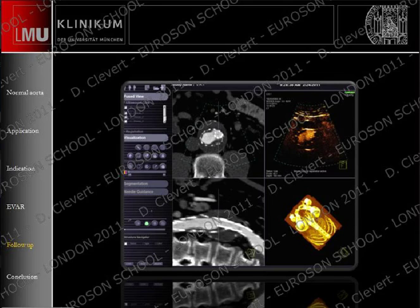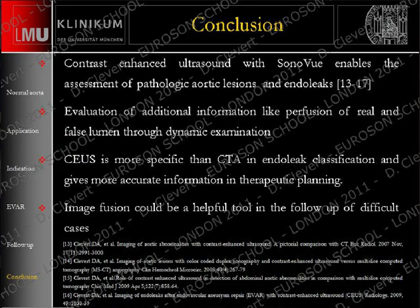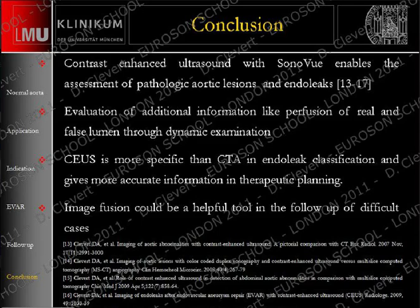In summary, this technique helps detect aortic disorders like dissection, covered rupture, and inflammatory aneurysm, and is also helpful for detection and classification of endoleaks. We have additional information — for example, true and false lumen in dissection, perfusion of the kidney or liver — all in one examination. Contrast-enhanced ultrasound is more specific than CT in the evaluation and classification of endoleaks in the abdominal aorta. In difficult cases, image fusion can be a helpful tool to explain pathology location and to monitor patients, for example in difficult follow-up cases. Thank you for your attention.